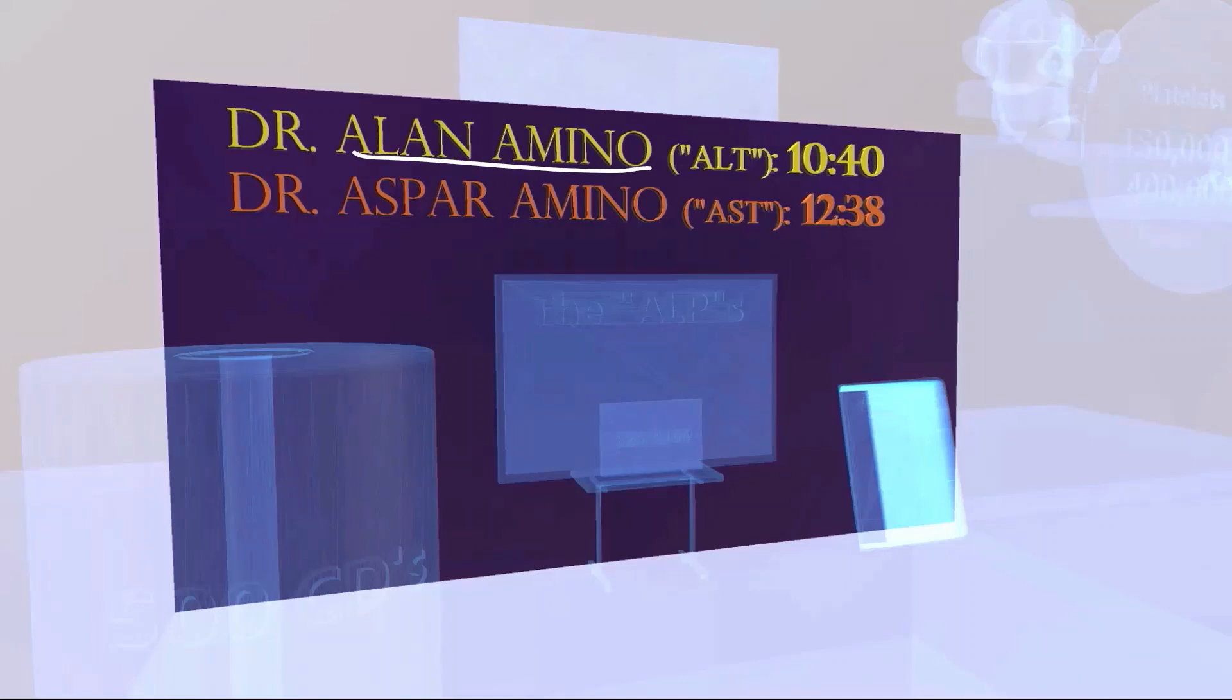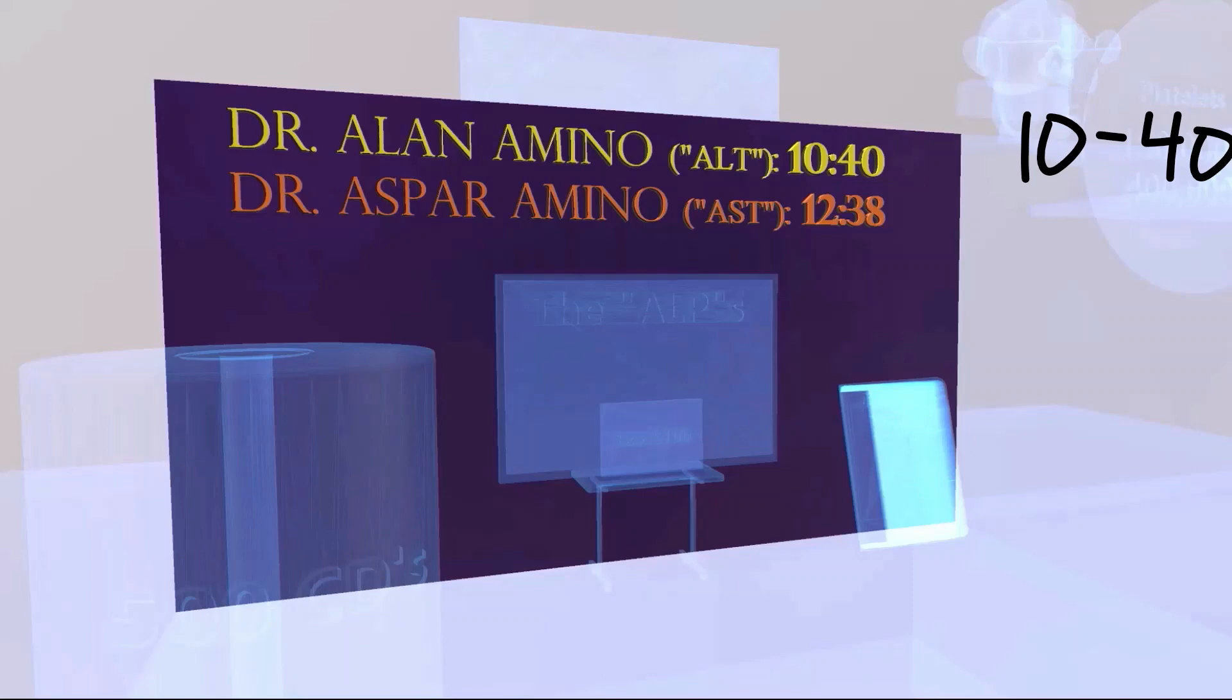Alan Amino for alanine aminotransferase ALT. He usually comes to the lab at 10:40 in the morning. 10:40 reminds us of 10 to 40, that alanine aminotransferase known as ALT ranges 10 to 40 units per liter.